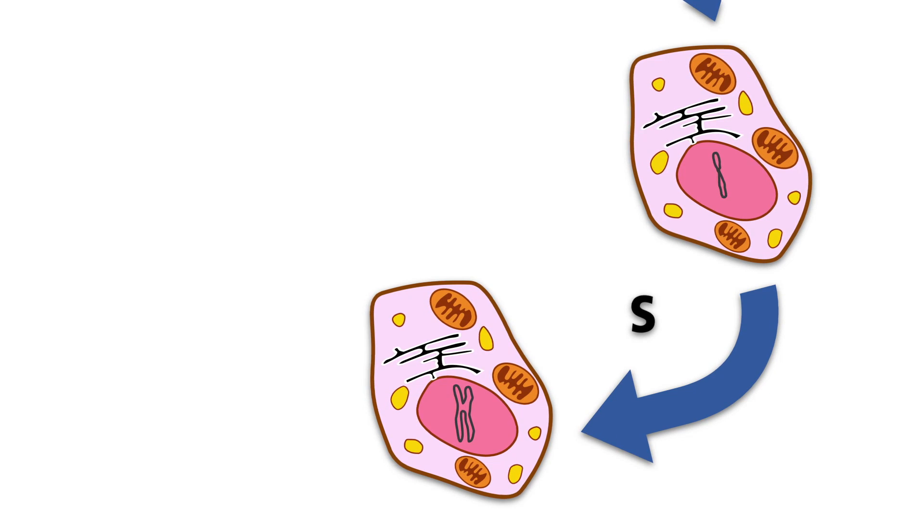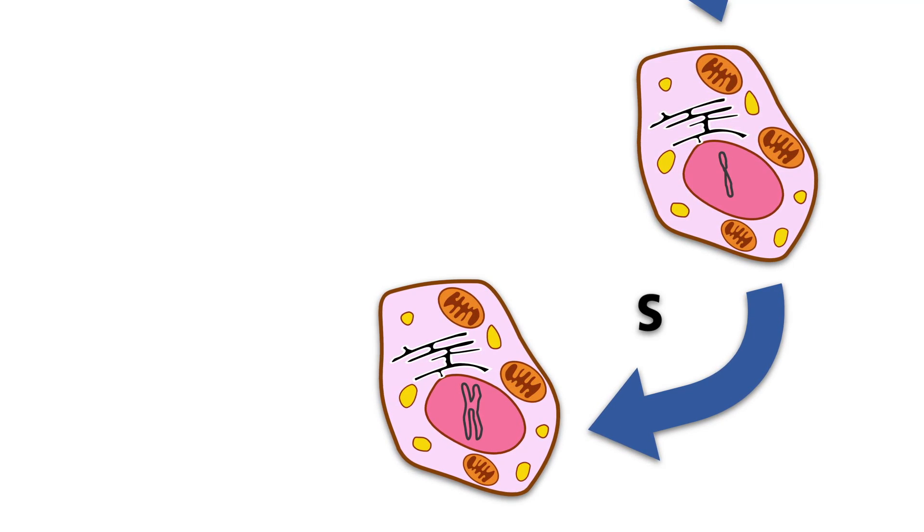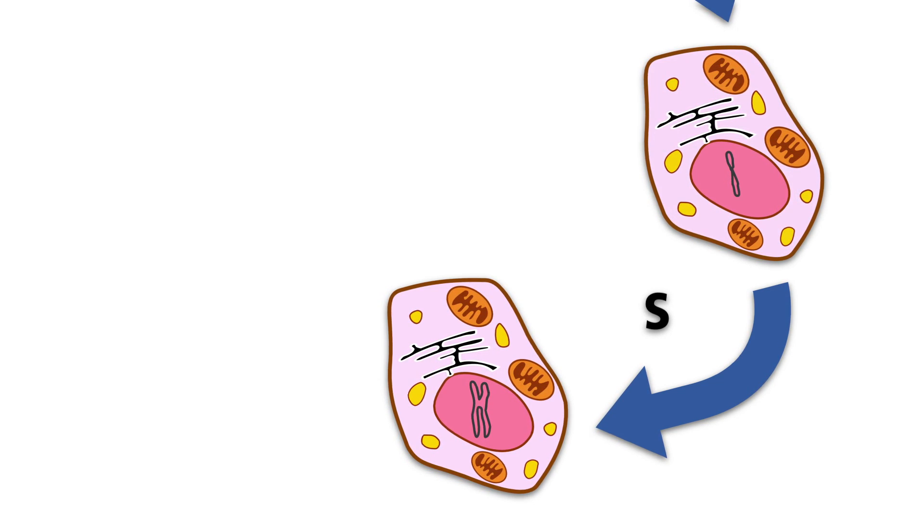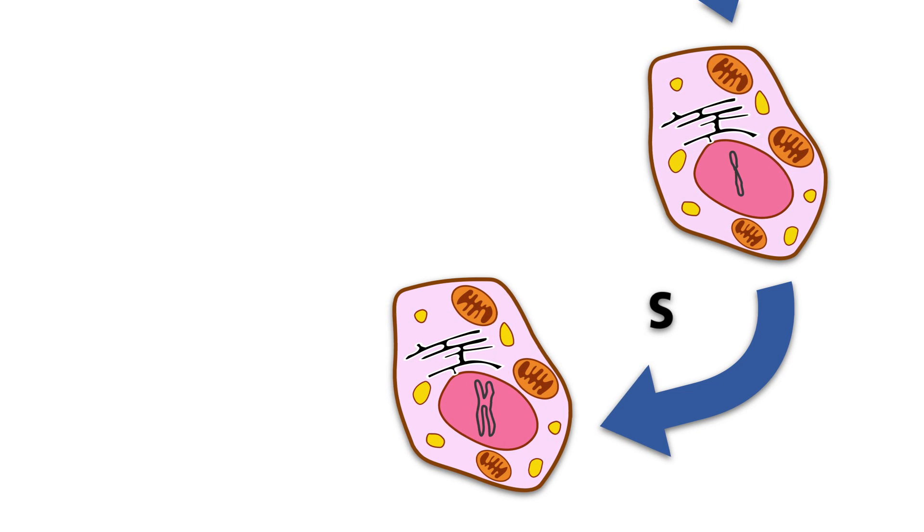So, between the end of the S-phase and the following mitosis, the cell is tetraploid. In this example, we see only one of the 46 chromosomes in its condensed form in the nucleus.